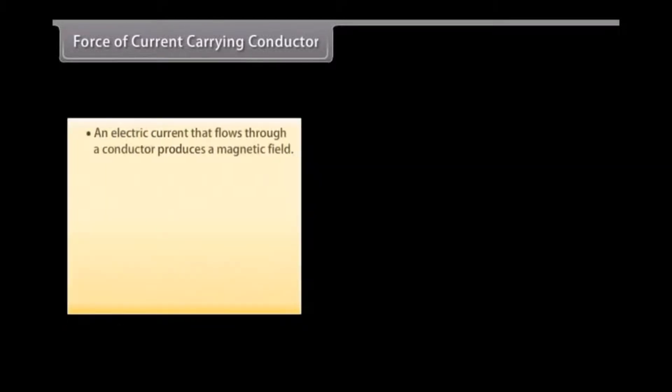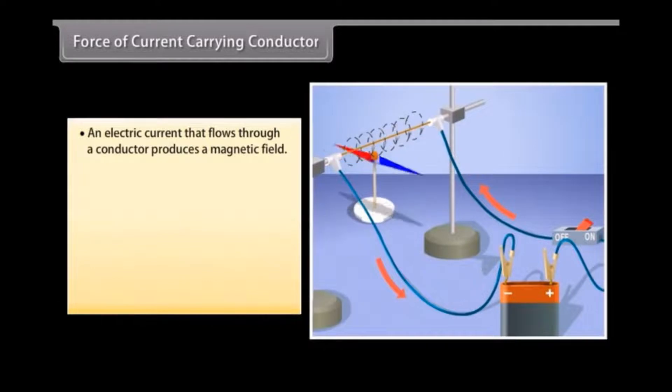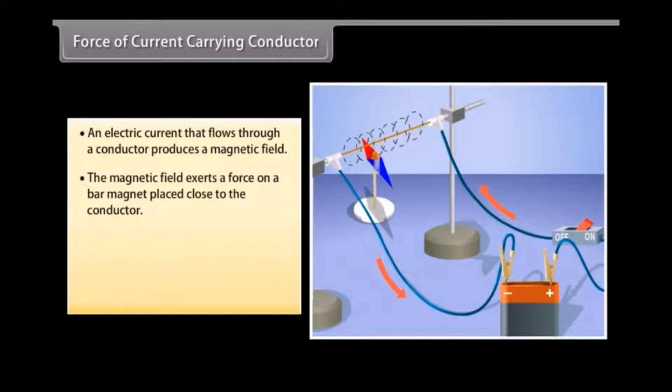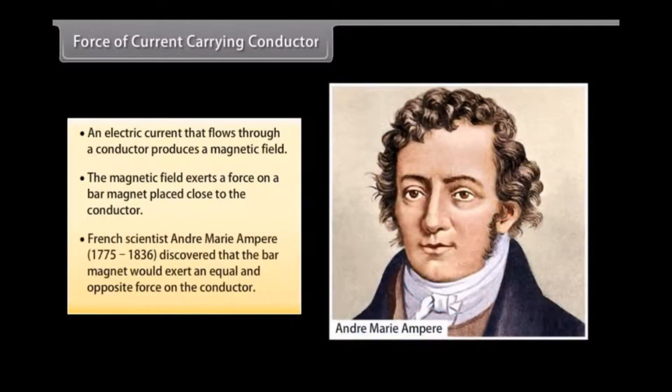Force of current carrying conductor. We have seen that an electric current that flows through a conductor produces a magnetic field. The magnetic field so produced exerts a force on a bar magnet placed close to the conductor. French scientist André-Marie Ampere, 1775-1836, discovered that the bar magnet would also exert an equal and opposite force on the conductor.